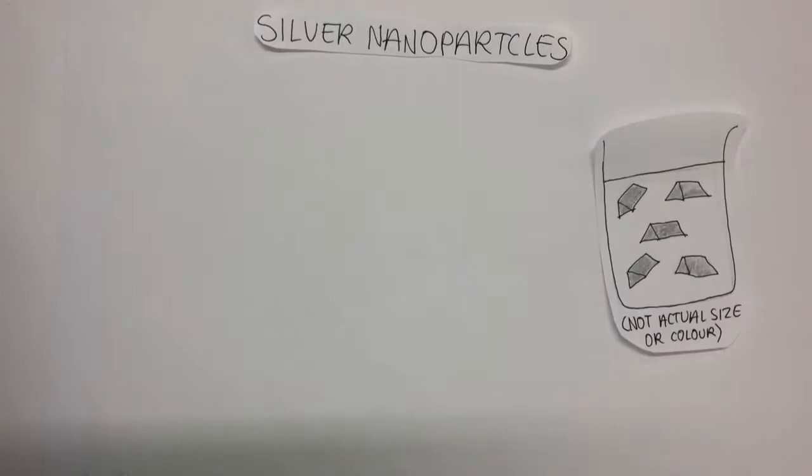Silver nanoparticles can be made in many different ways, but one way is to combine silver nitrate, sodium citrate, and hydrogen peroxide.